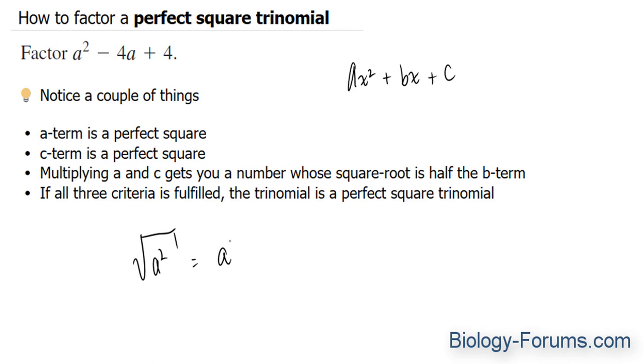Similarly, let's find out if the c term is a perfect square. And it is a perfect square. So, so far, we're two for two. The next thing is if you multiply a and c, you should get a number whose square root is half the b term. What I mean by that is the following.